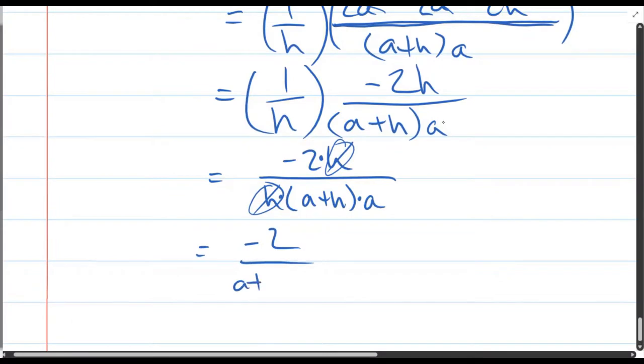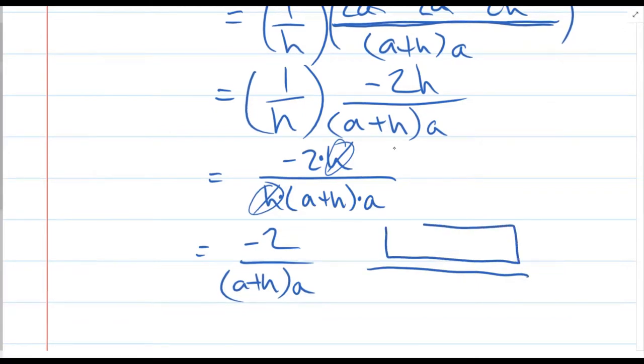Negative two over a plus h times a. This is the answer to the question. The way to input it, there's two boxes on this question. I'll scroll up and you'll see that.